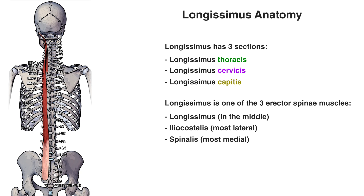To make it easier to learn about the origin and insertion of this muscle, I've labelled all of the vertebrae on the right-hand side and numbered the ribs on the left-hand side. We're also only going to be looking at the muscle on the left-hand side, but bear in mind these origins and insertions are mirrored onto the right-hand side as well, because the muscle exists on both sides.